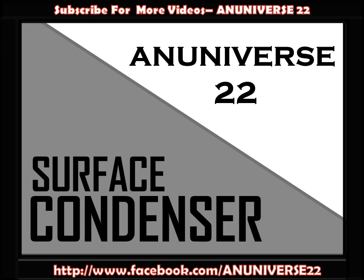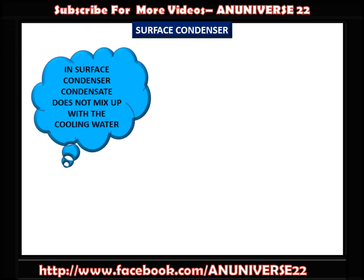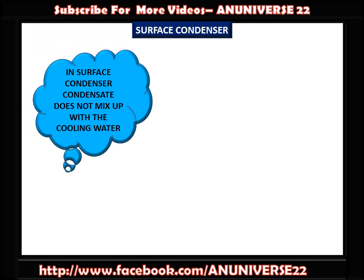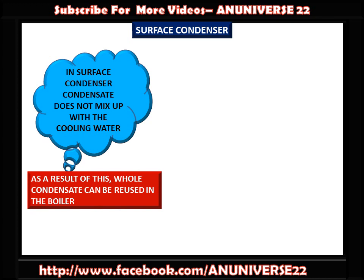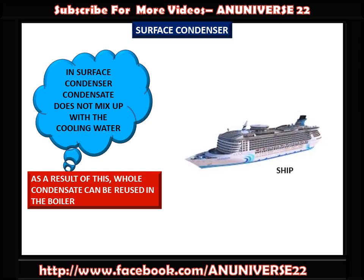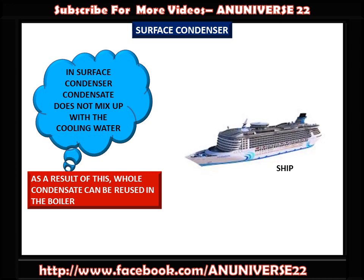A surface condenser has a great advantage over the jet condenser. In a surface condenser, the condensate does not mix up with the cooling water. As a result, the whole condensate can be reused in the boiler. This type of condenser is essential in ships which can carry only a limited quantity of fresh water for the boilers. It is also widely used in land installations where inferior water is available, or where better quality feed water is to be used economically.